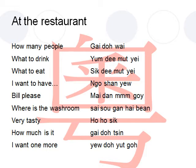Once you finish your food, you want to say the bill please. In Cantonese, the bill please would be 買單麻煩. 買單 means getting the bill, and 麻煩 means please. So if you want to say the bill please in Cantonese, it will be 買單麻煩.